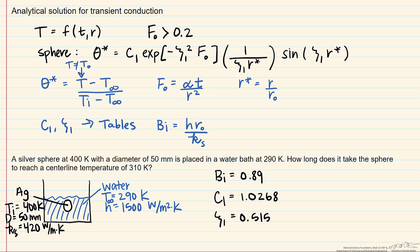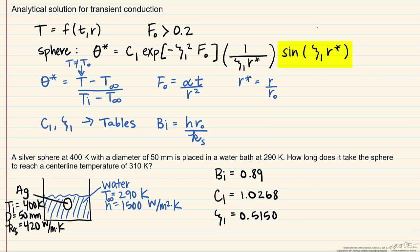One thing that I should note is that in our equation for our dimensionless temperature, you have to be really careful in this sine term, because that eigenvalue is in terms of radians.